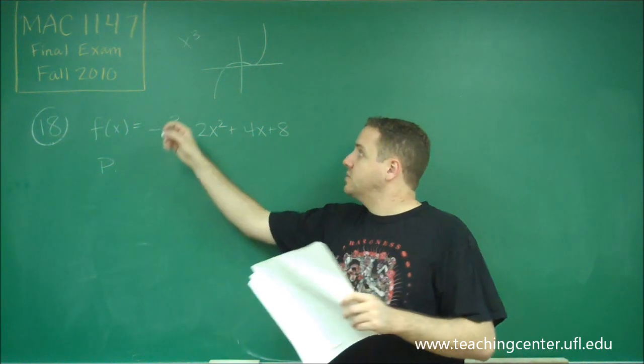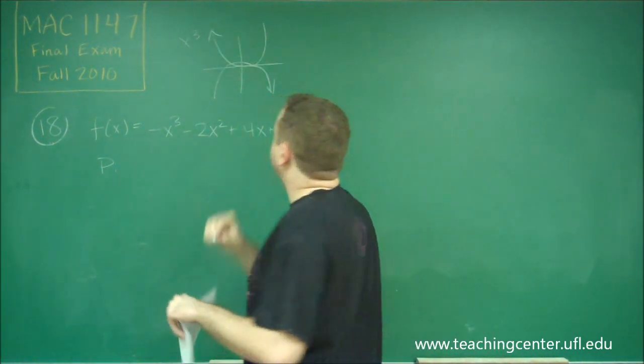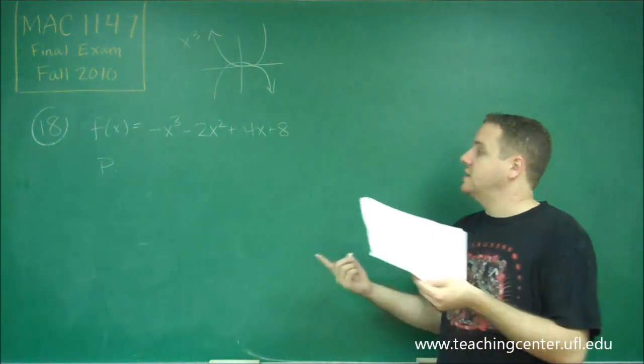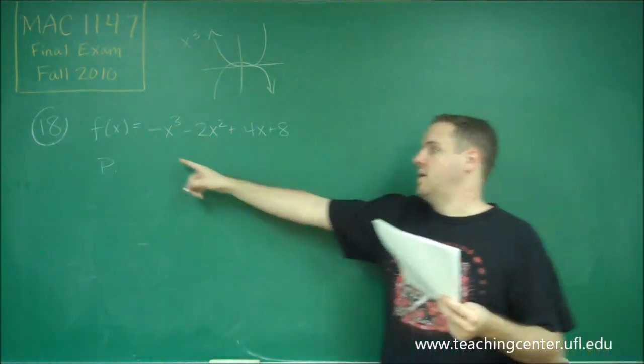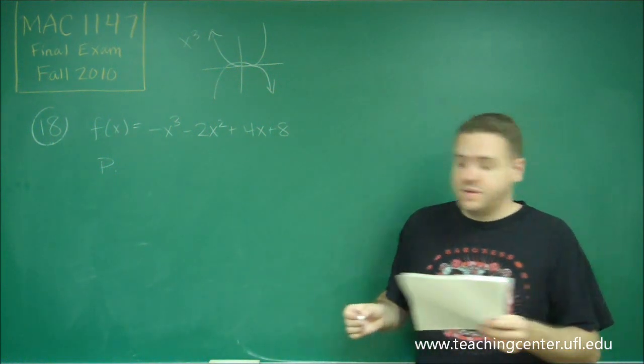But we have a negative in front, so it's going to switch it with the arrows there. Rises to the left and falls to the right is exactly true for a negative degree 3 or odd polynomial. So we have P is correct.